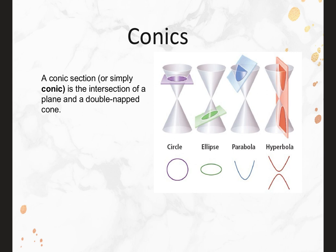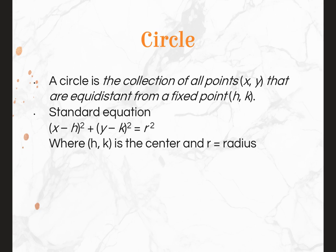These are the four conics we're going to cover. Today we're going to do the circle and the parabola. A circle is defined as the collection of all points that are equidistant from a fixed point. That point is your center, so it is H, K. In the standard form of the equation, notice there are minuses in front of them — you will always change the signs on your H and your K.